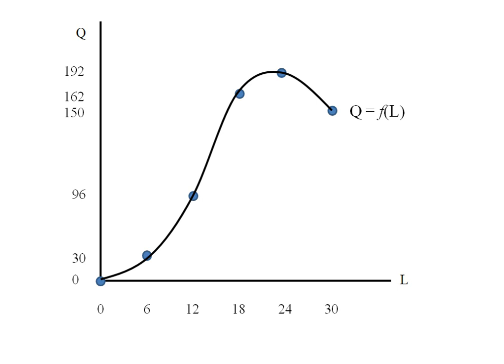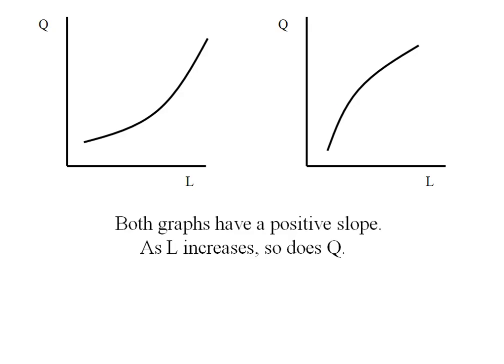Let's examine this curve in a little more detail. We're going to break it down into some parts. Notice these two graphs both of them have a positive slope so as labor increases so does the quantity produced. However the rate of the increase is different.